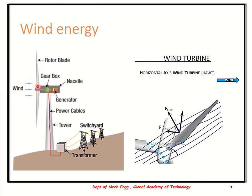These rotor blades are connected to the gear setup using a gear box, which in turn is connected to the generator. The gear box and the generator are placed inside a nacelle. As the wind keeps blowing, the rotor blades rotate, the gears rotate, and the alternator in the generator also rotates, although at different speeds, and thus power is extracted.